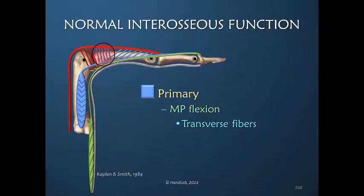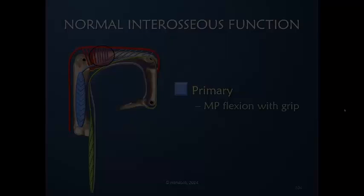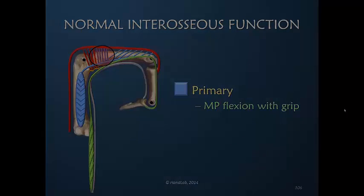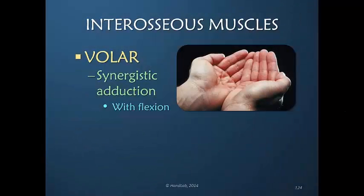This position is primarily being accomplished by the interosseous muscles. The most complicated function to explain is that of the interosseous muscles during normal finger flexion, a normal synergistic motion which is explained beautifully by virtue of the anatomy of the volar interosseous muscles.